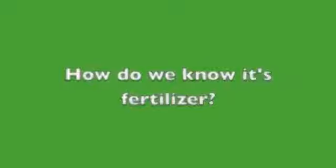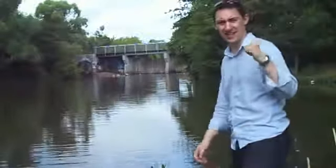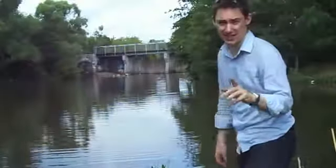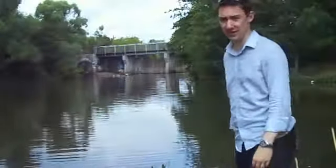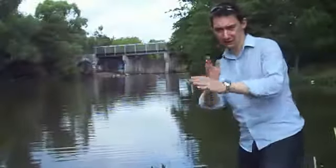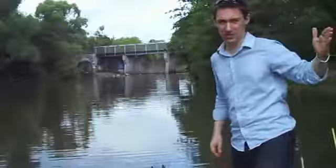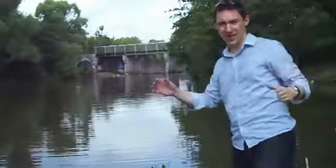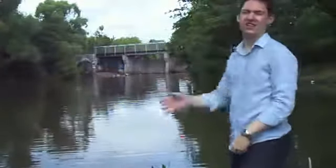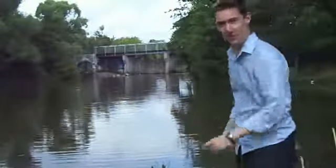We know that in lakes like this one it's phosphorus that causes the problem, because back in the day in something called the Experimental Lakes Area up in northern Ontario, they took a lake and literally divided it in half. They put up a barrier so that one half had normal conditions and the other half they added phosphorus to. The side with phosphorus had a huge amount of algae. The side without phosphorus was perfectly normal, like this one.